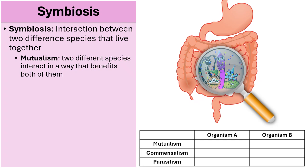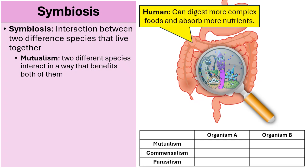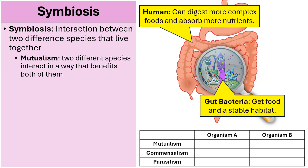One final example of mutualism is the relationship between humans and the bacteria that reside within our gut. We both benefit: humans benefit because the bacteria help us digest more complex foods and absorb more nutrients, and in return the bacteria are given a home and a stable environment to live in. In the table, in mutualism, both organism A and organism B benefit.